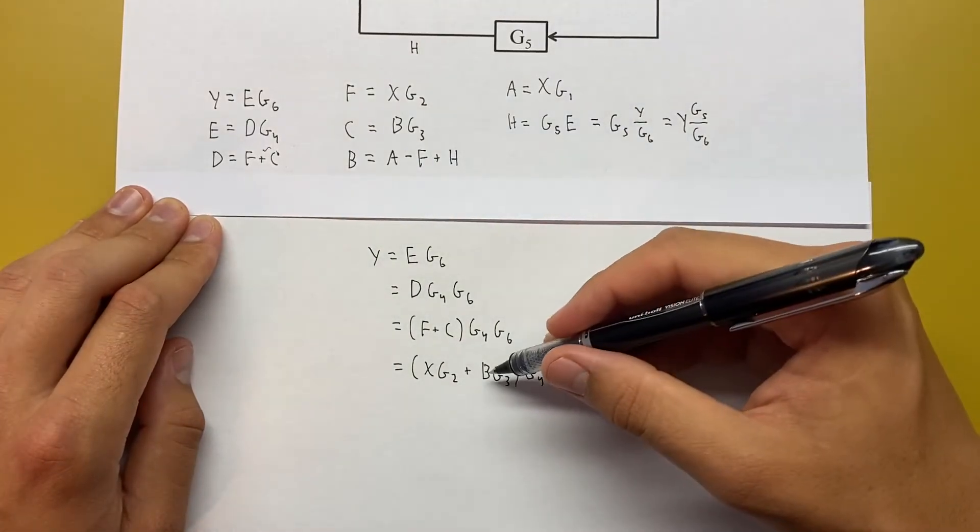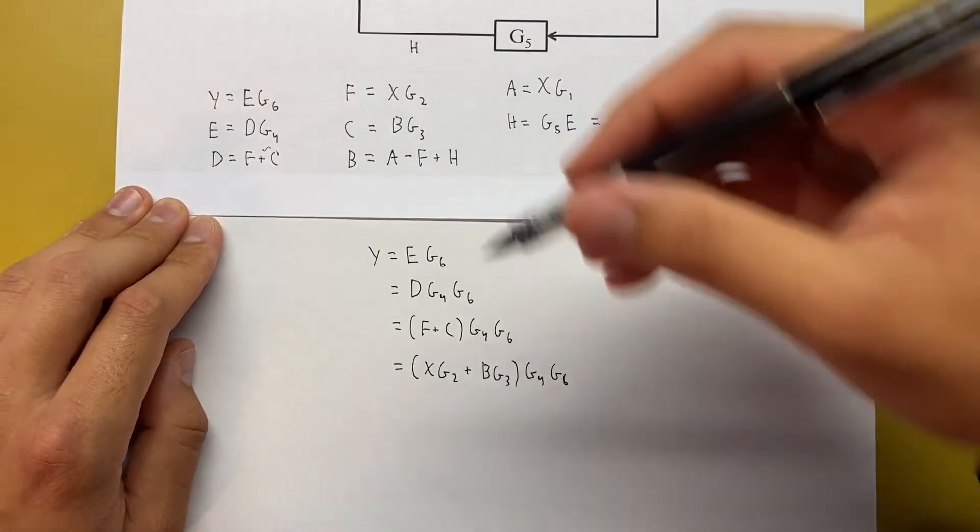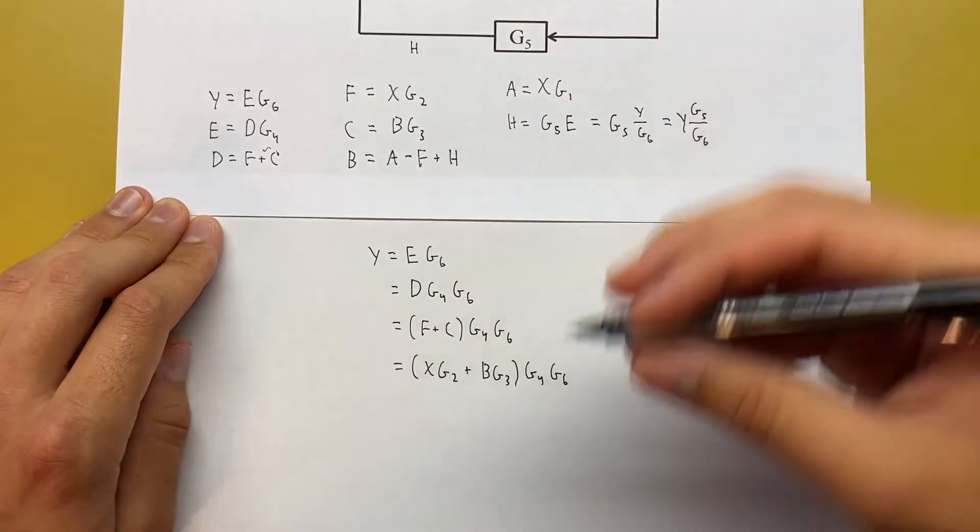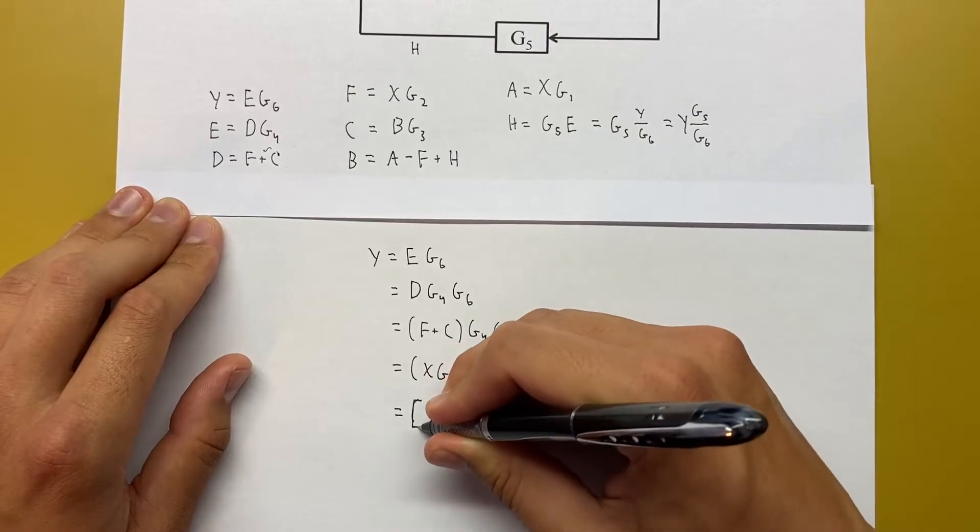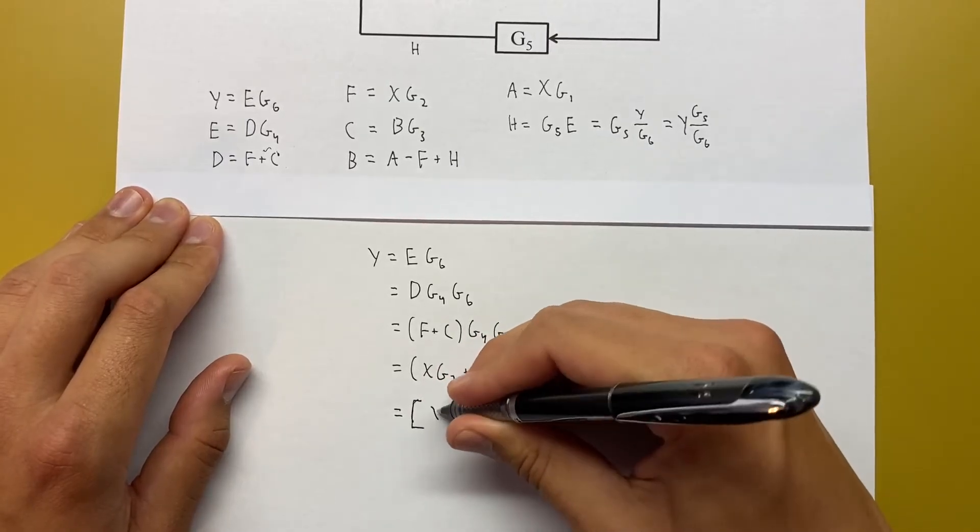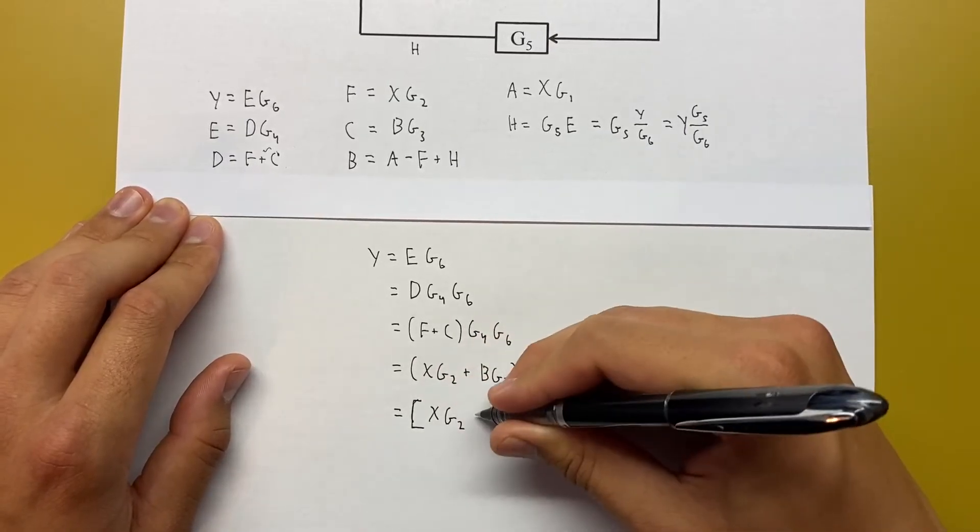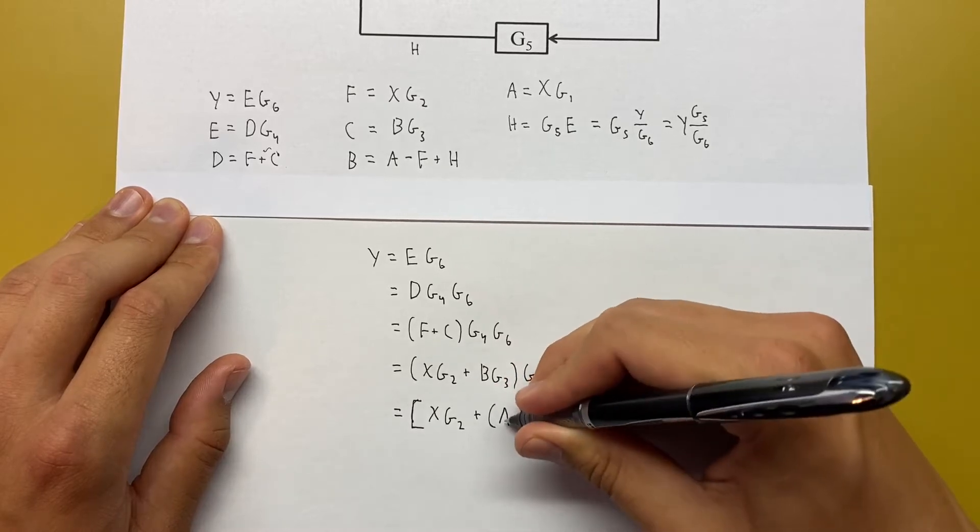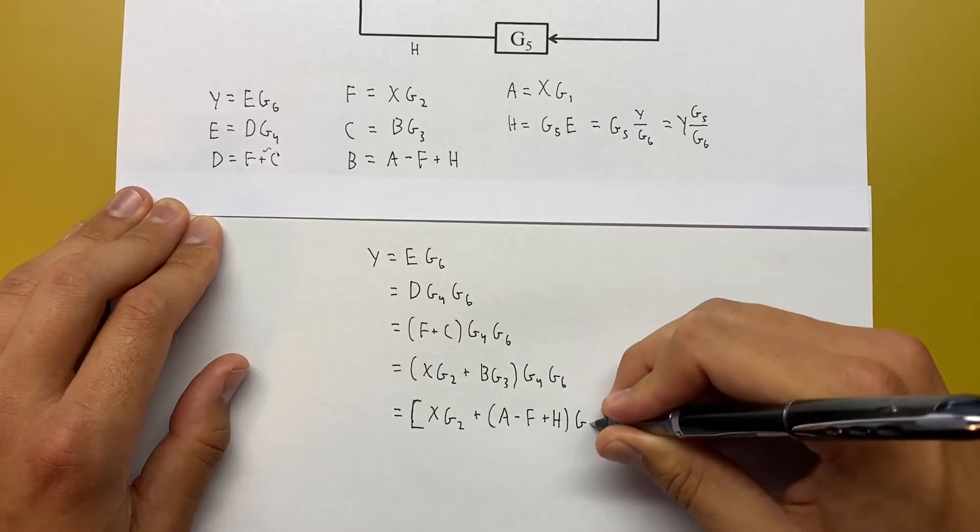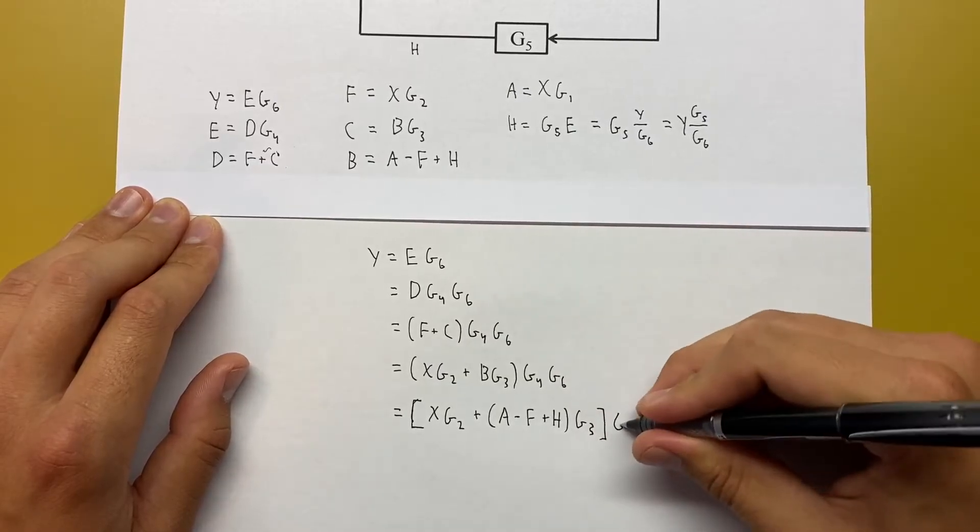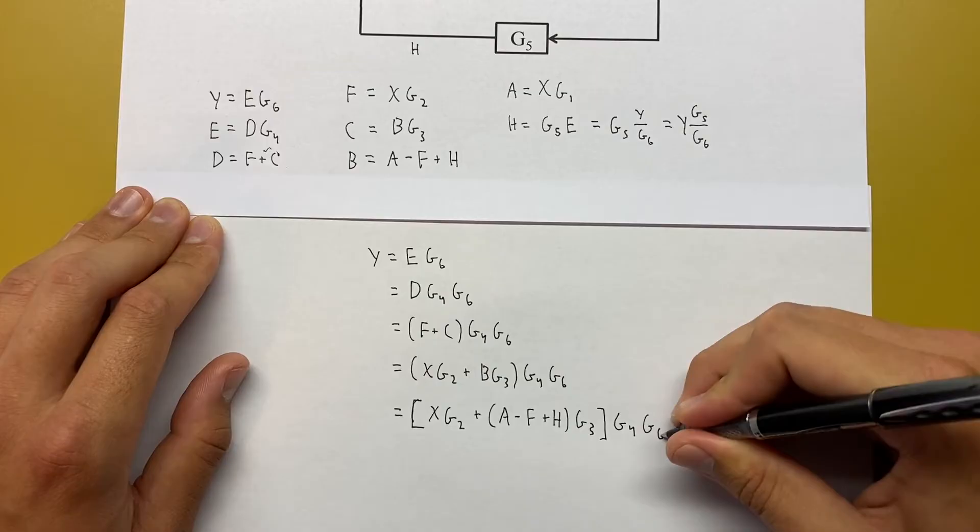Now we just have to replace this B. B is A minus F plus H. So we'll throw that in there. I'm going to do brackets now. So X G2 plus A minus F plus H, G3, close bracket, G4, G6.